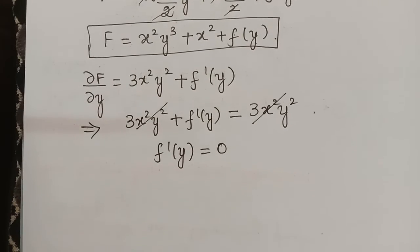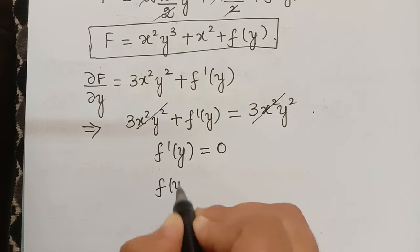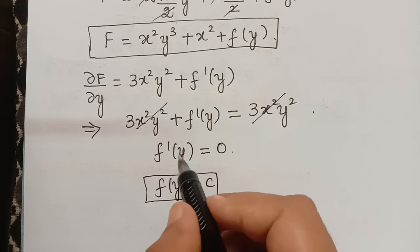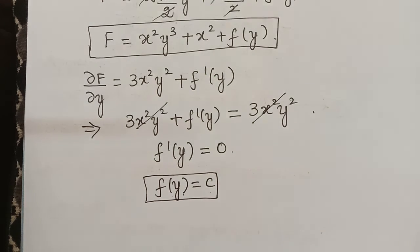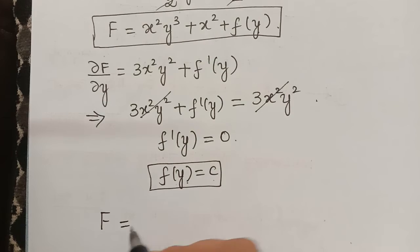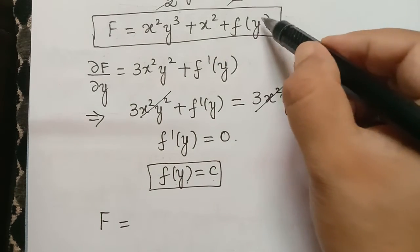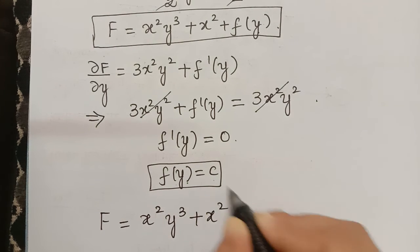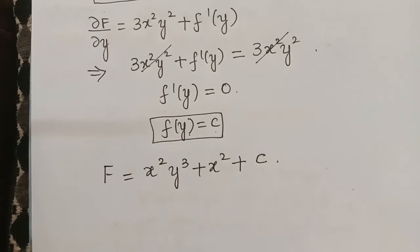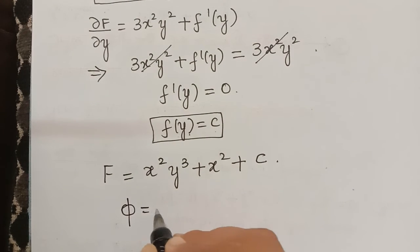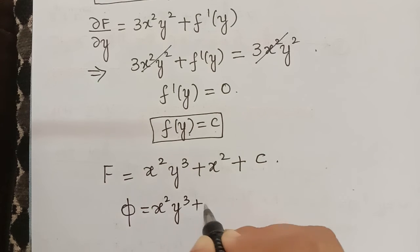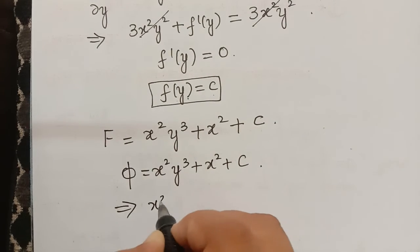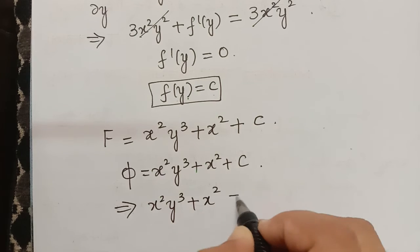f'(y) = 0 only if f(y) equals some constant c. So substituting back, f = x²y³ + x² + c. Therefore the general solution is x²y³ + x² + c = 0, which we can also write as x²y³ + x² = c.